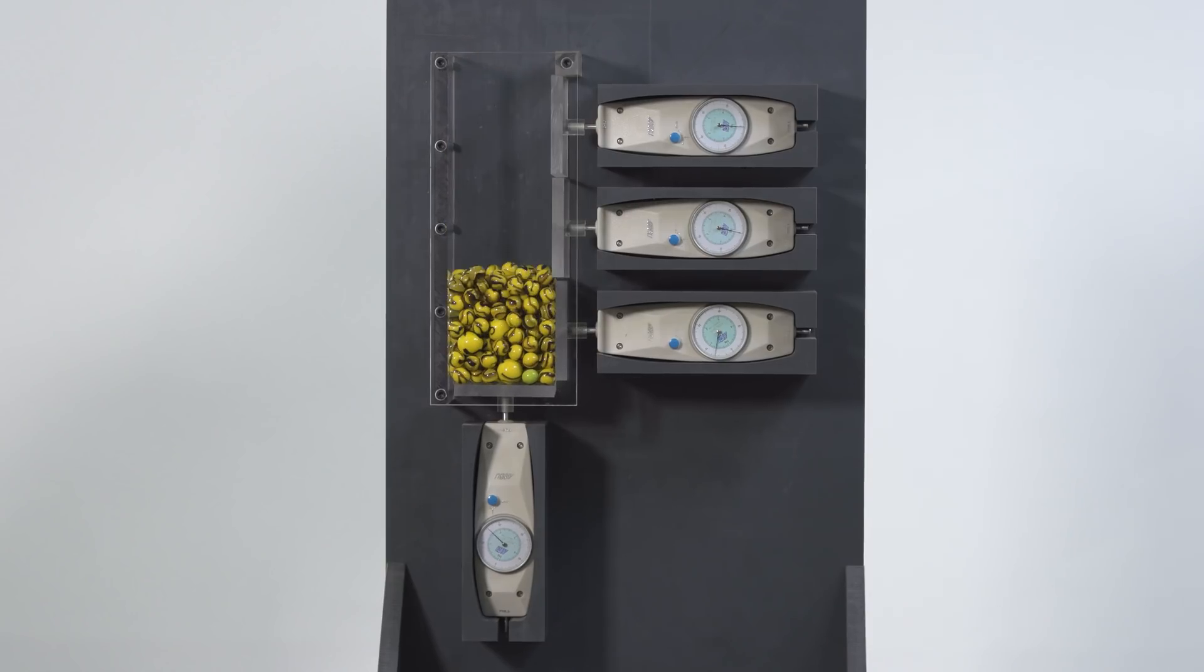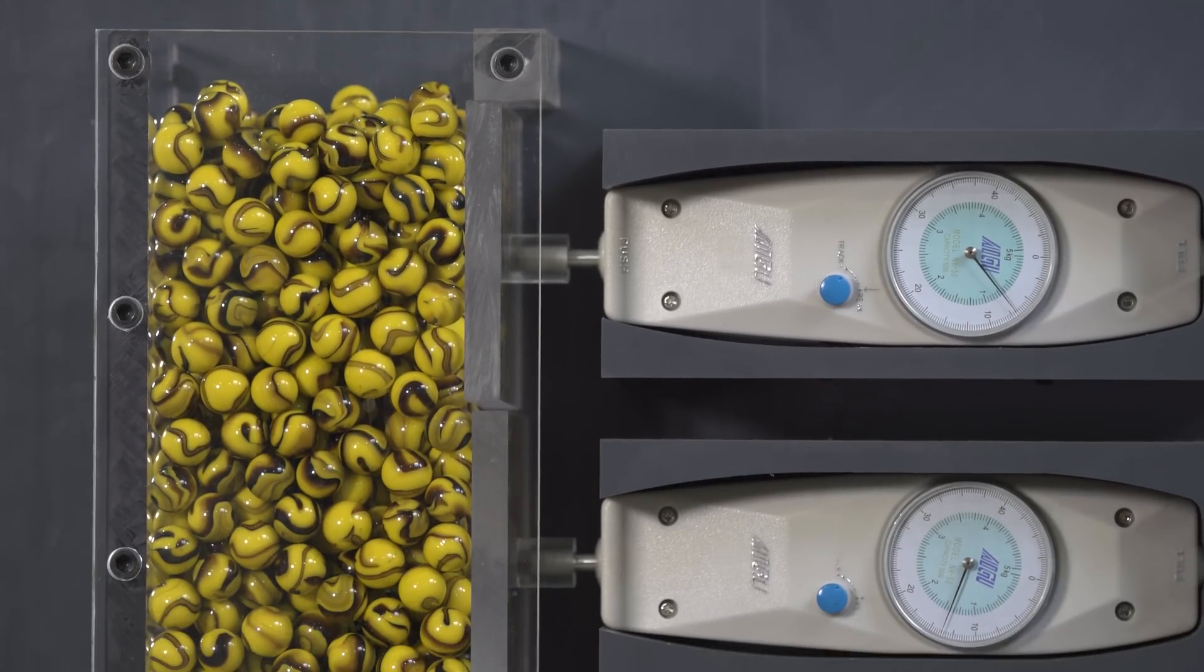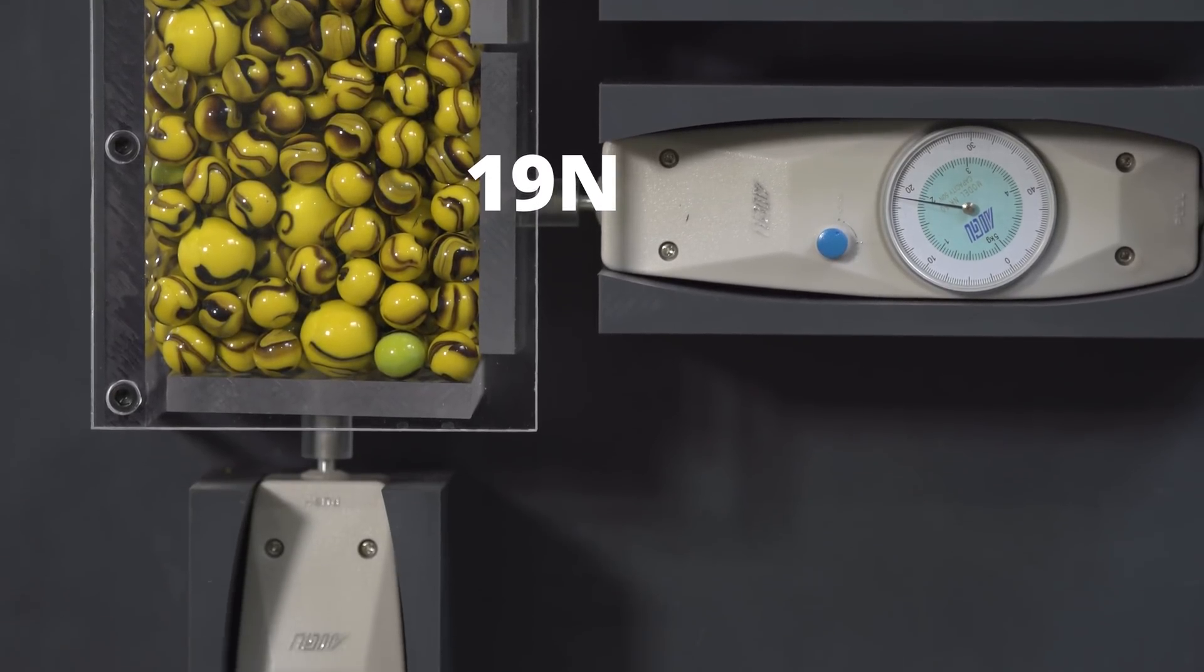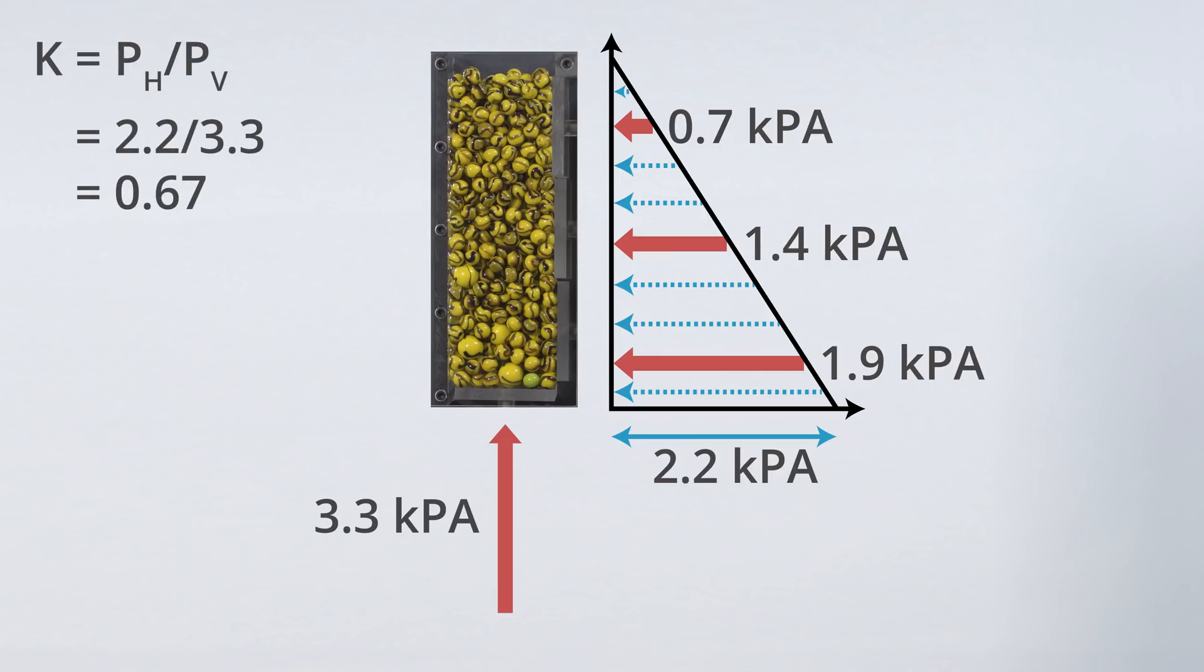When the chamber is filled with marbles, an example of a granular material, the indicated horizontal forces are 7, 14, and 19 newtons, and the downwards force on the bottom window is 33 newtons. And it is easy to see that the corresponding horizontal pressures do indeed increase linearly with depth. Based on a straight-line fit, the horizontal pressure at the bottom of the chamber would be 2.2 kilopascals. The measured vertical pressure there is 3.3 kilopascals, and dividing the horizontal bottom pressure by the vertical one gives a K of 0.67.